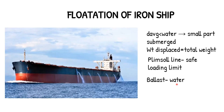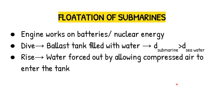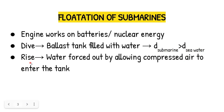This is about the flotation of an iron ship based on the Archimedean principle. Next is the flotation of submarines. Submarines can sail on water as well as dive in, using engines that run on batteries or nuclear energy. When the submarine wants to dive, the ballast tank is filled with water taken from the sea, which increases the submarine's density so it becomes denser than the water and dives. To rise, water is forced out of the ballast tank by allowing compressed air to enter.